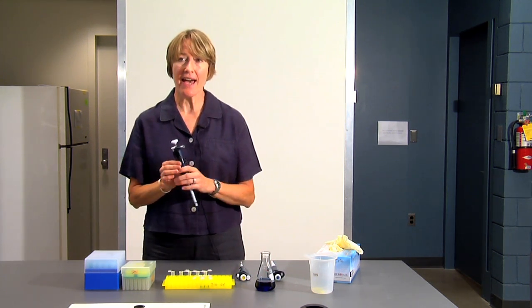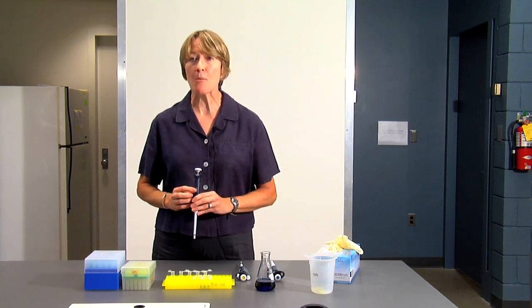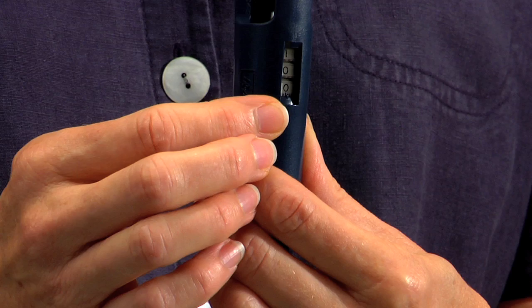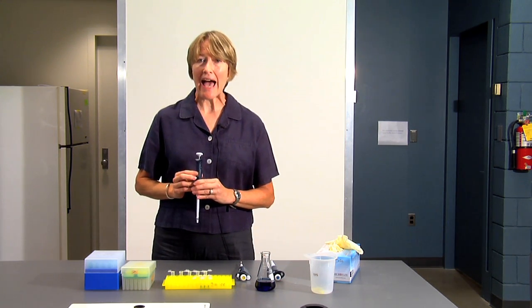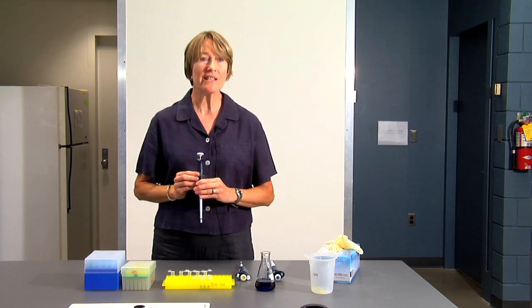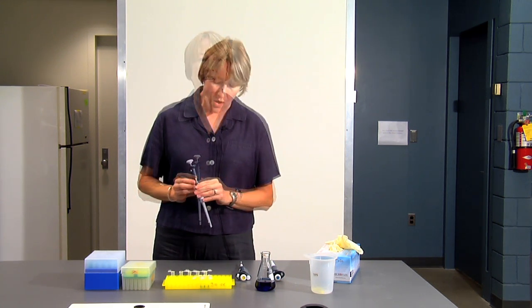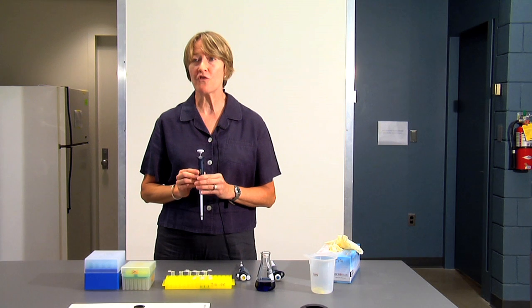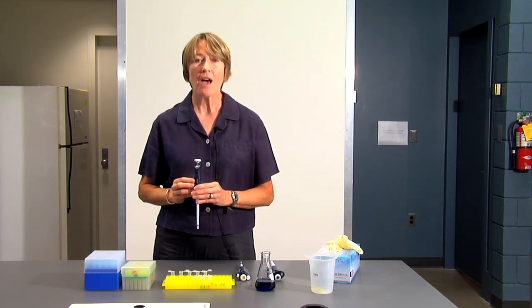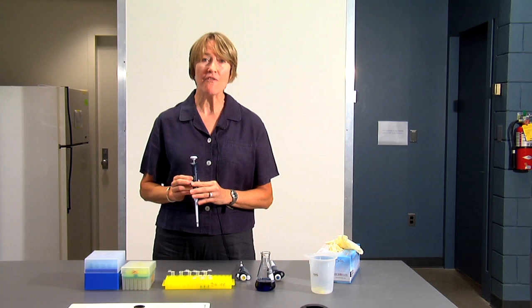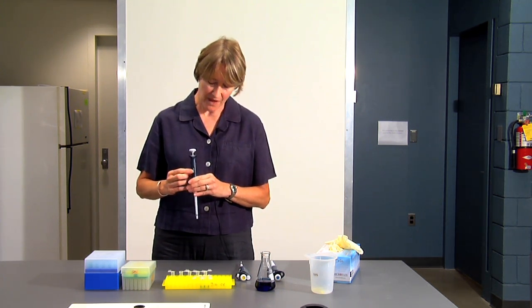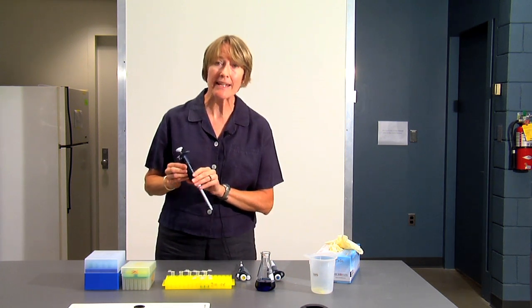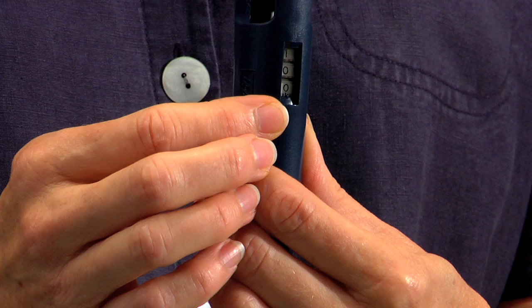Each of the pipetters has a series of three numbers on the barrel, and this is how you set the volume that you want to use. Some of the numbers are black, and some will be red. The red numbers indicate that you have to be alert. We'll start with the P200 first because that's the easiest one to set. On the P200, you have three black numbers on the dial, and essentially what you see is what you get. If the pipetter is set at 100, that will measure 100 microliters.